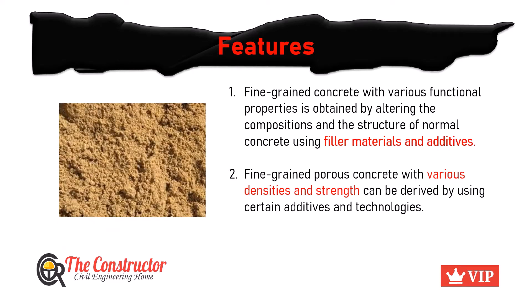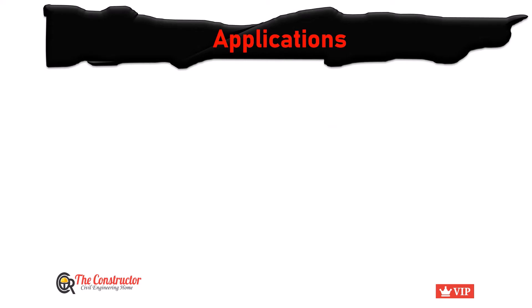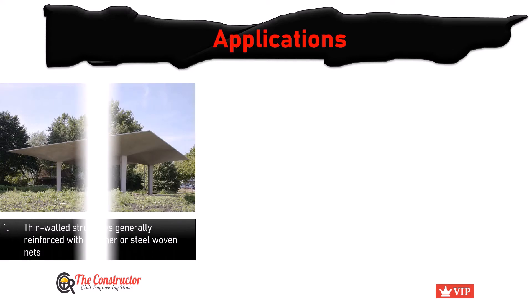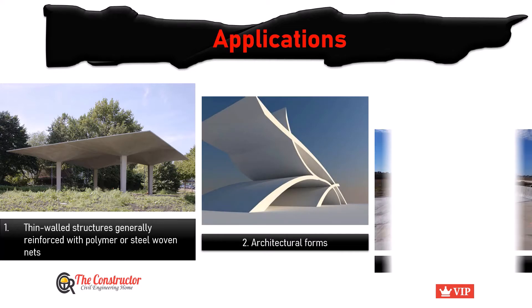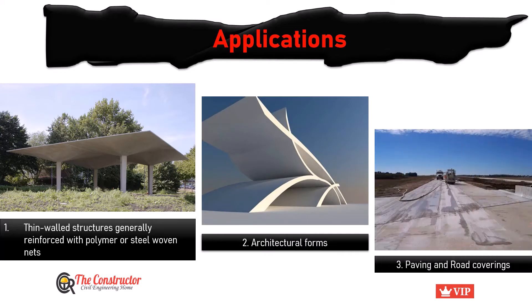The area of application of fine grain concrete is practically irreplaceable by any other type of concrete. It is well known for the construction of thin wall structures that are generally reinforced with polymer or steel woven nets, for architectural forms, for pavings, and for road coverings.